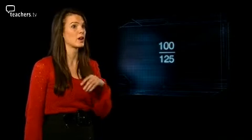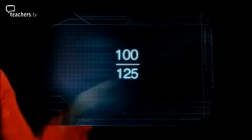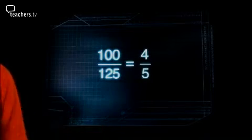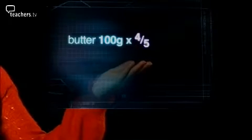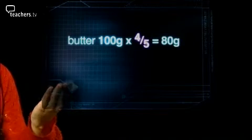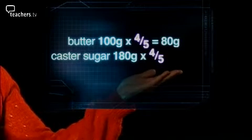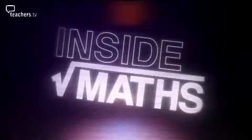Dave has eaten too much chocolate, leaving only 100 grams out of the 125 grams needed. If we simplify 100 divided by 125, we get four-fifths. To keep all the ingredients in the same proportion — so the brownies still taste good — everything must be multiplied by four-fifths. Four-fifths of 100 grams of butter gives 80 grams. Four-fifths of 180 grams of caster sugar gives 144 grams. I'll leave Dave to work out the rest since he created the problem!